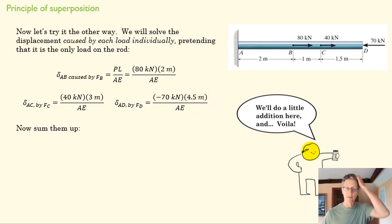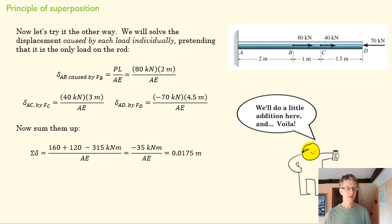We're going to say, what's the deformation caused by the 80 kilonewton load? What's the deformation caused by the 40 kilonewton load? What's the deformation caused by the 70 kilonewton load? And again, notice our signs here. These are tensile. They're going to expand our rod. This one is compressive. So it's going to be negative. And we sum those up. And I don't include AE here just to keep things a little tidier. But we find that the deformation is exactly the same as the deformation we found before. And we'd expect that. These are just two ways of solving the same problem.